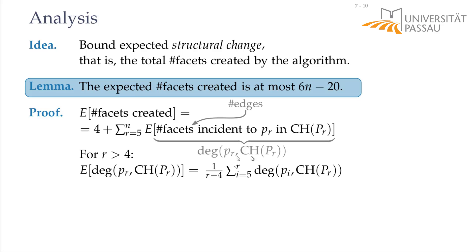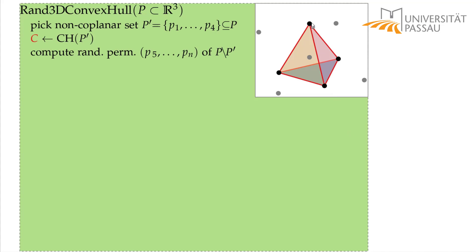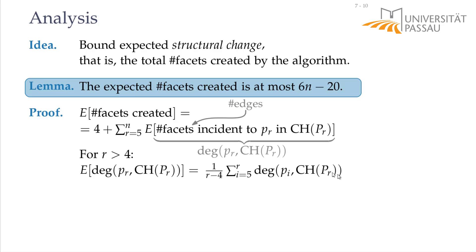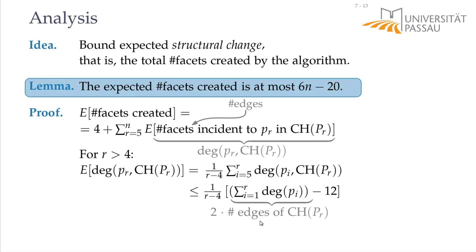We want to bound the sum of degrees of the r minus 4 random vertices by the sum of degrees of all vertices. For the first 4 fixed vertices, we know they must have degree at least 3, both initially and after any additions. So we bound the sum by the total degree sum minus 3 for each fixed vertex, giving minus 12. The total edge count for r points is at most 3r minus 6, so the total degree sum is at most 6r minus 12. Subtracting 12 gives 6r minus 24, and dividing by r minus 4 yields at most 6.